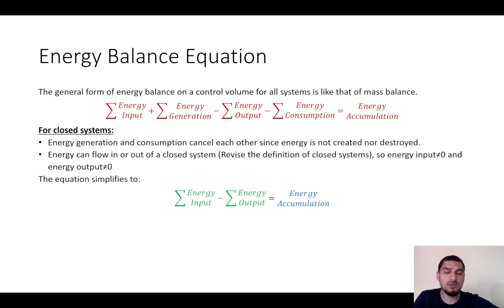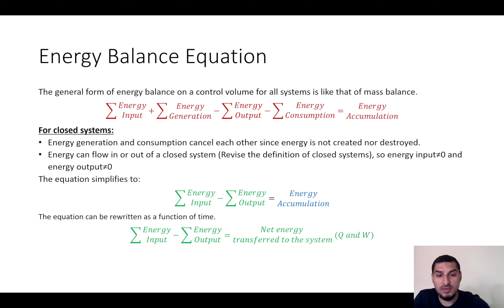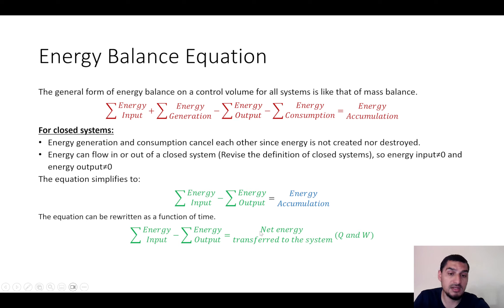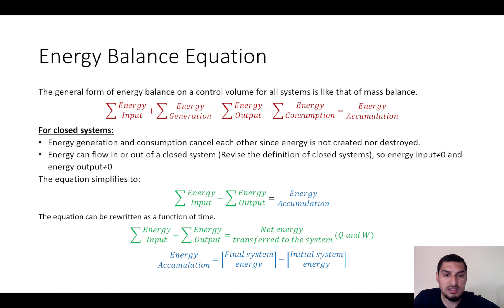The energy input and output represent what goes into or out of the system in the forms of work or heat. The energy accumulation is the increase or decrease of energy of the system, which takes one of three forms: kinetic, potential, or internal energy. The energy transfer to the system is work or Q, the left-hand side of the equation. The accumulation is final energy minus initial energy. Since this is a closed system, it is by definition an unsteady state system, so there is a change with time — an initial state and a final state.